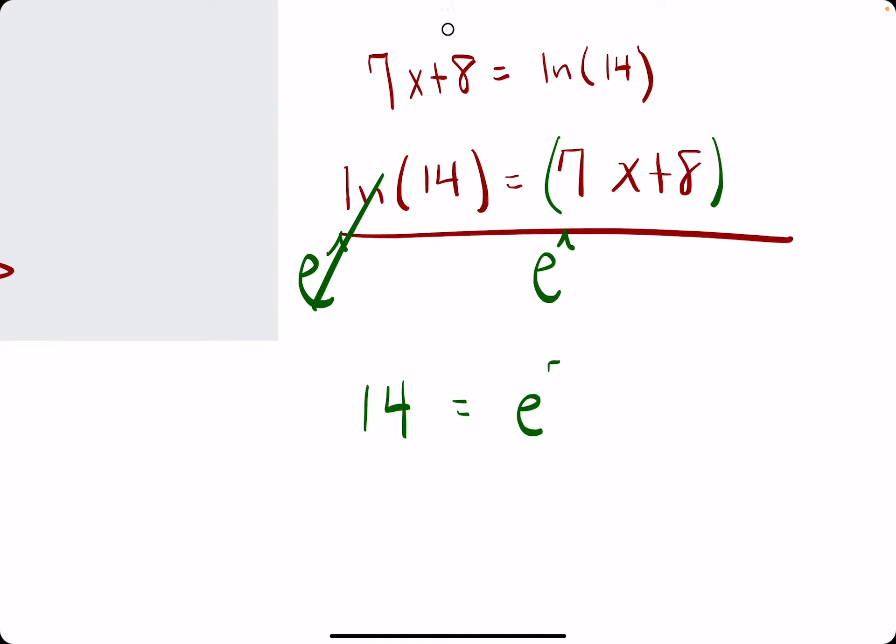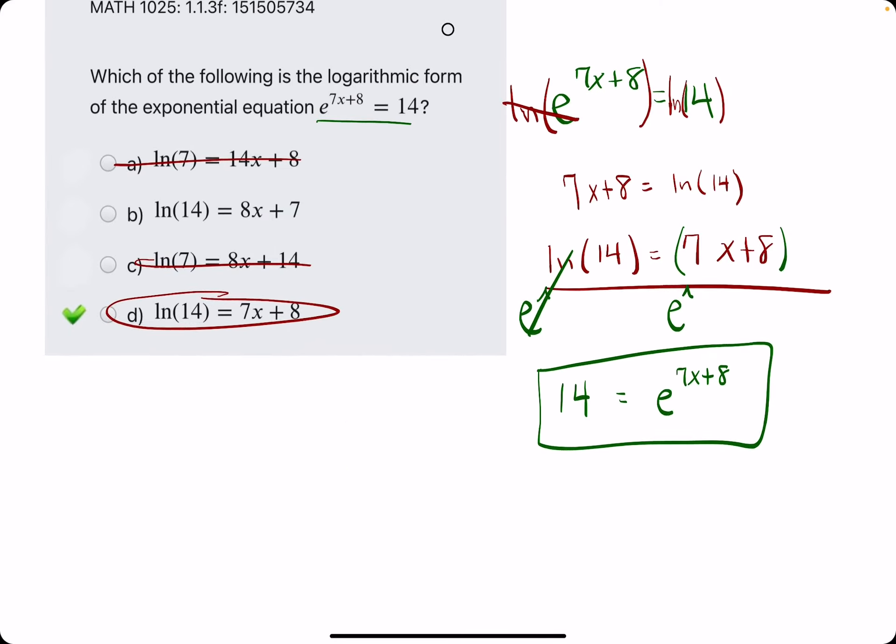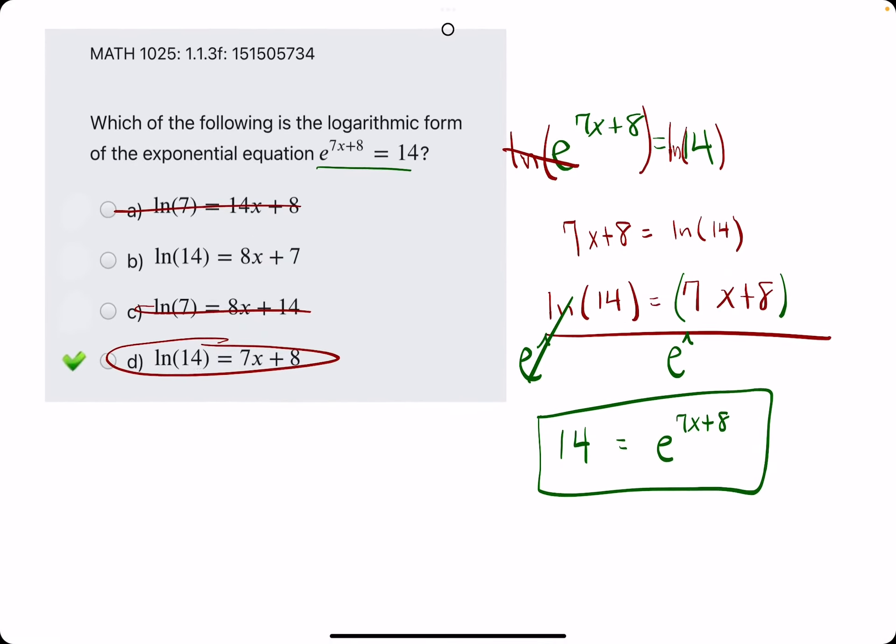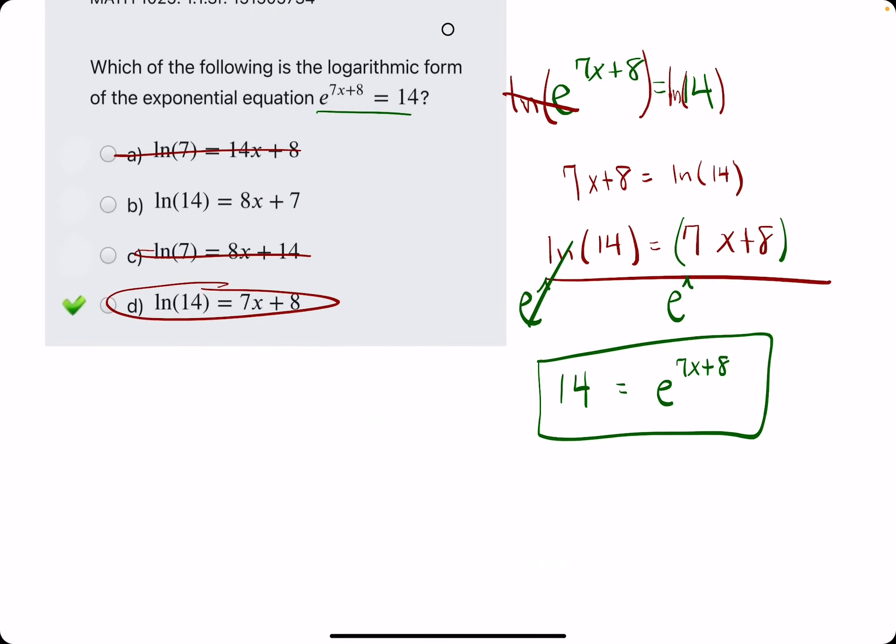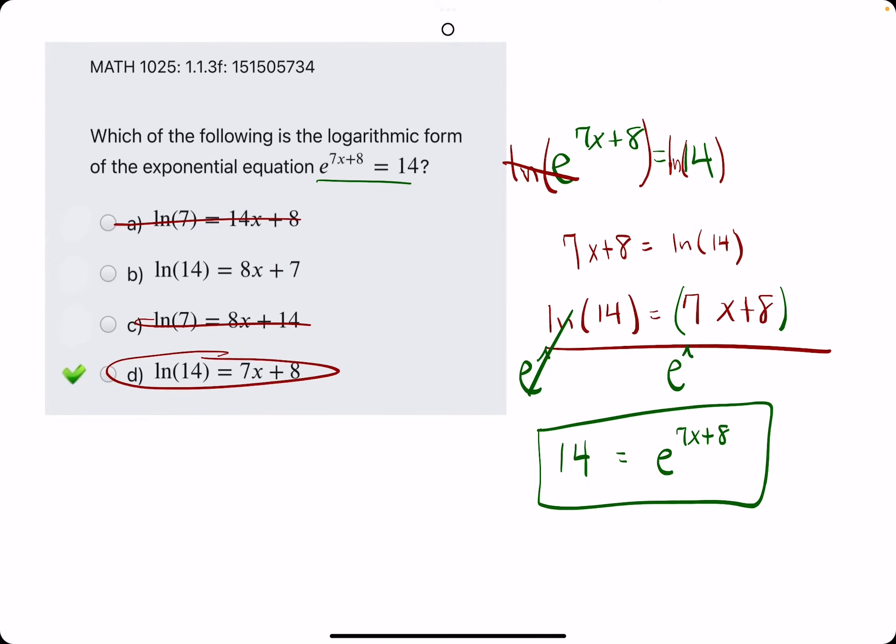But e raised to the 7x plus 8 on the right side. So sometimes they ask for exponential to logarithmic, sometimes they ask for the opposite. So it's just the opposite procedure. So feel free to check out the other example I'll work out for this.